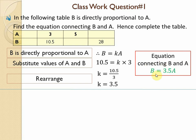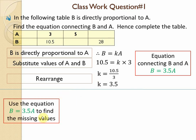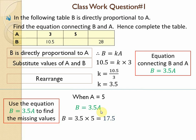Now we have the equation b = 3.5a. When a = 5, we substitute into the equation: b = 3.5 × 5 = 17.5. So we write 17.5 in the table.